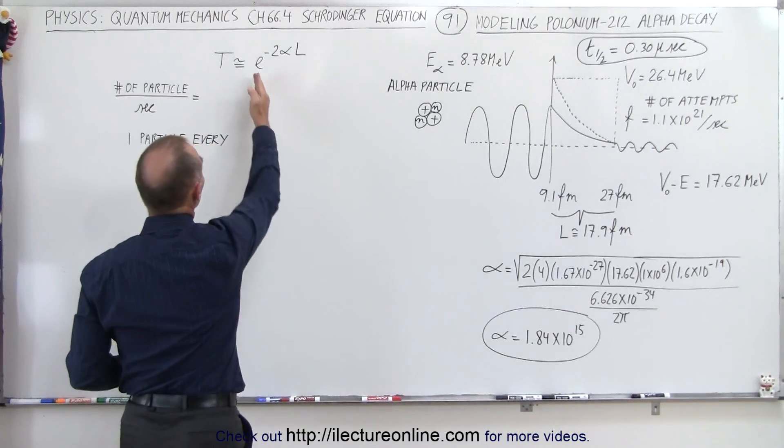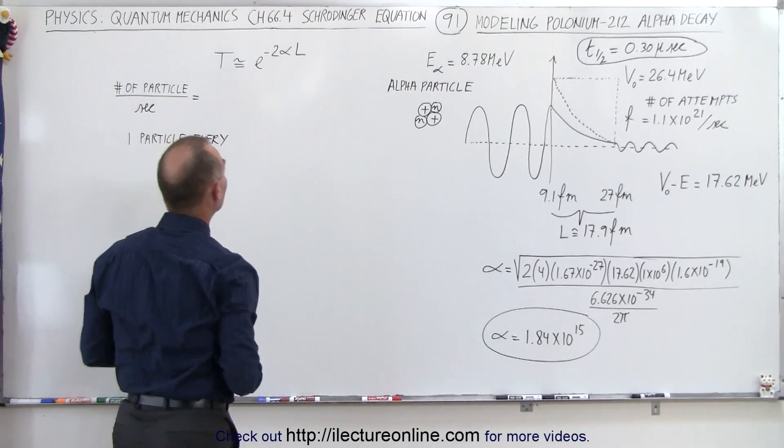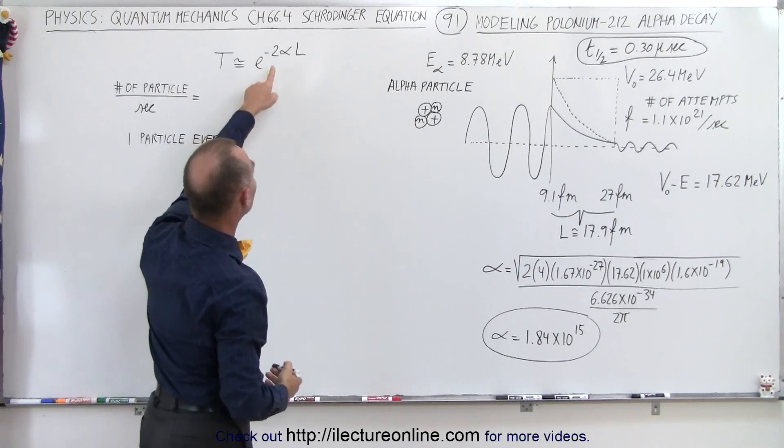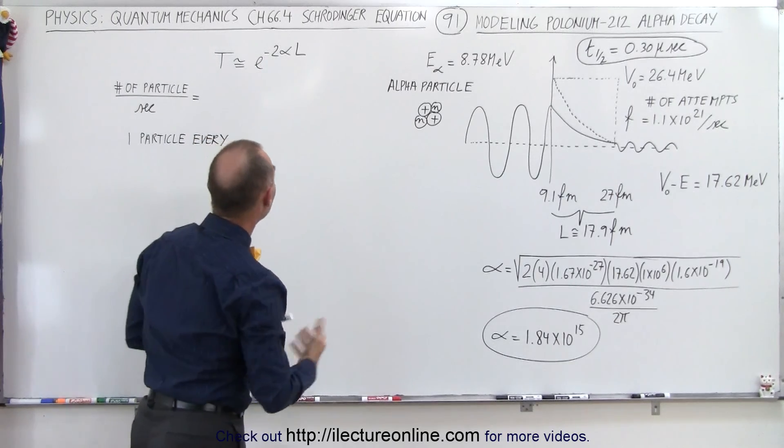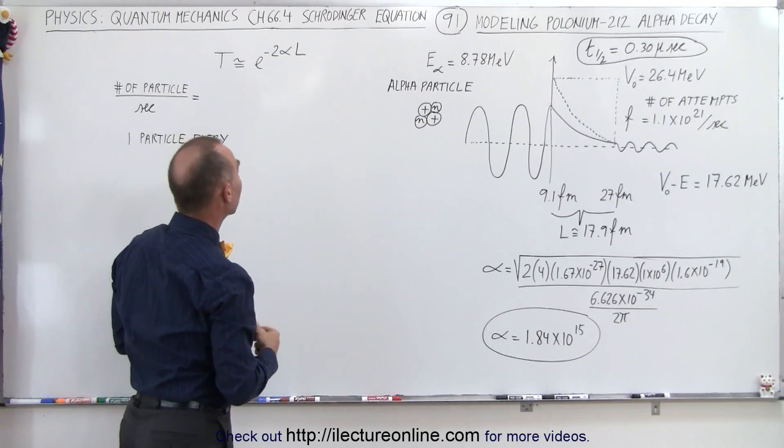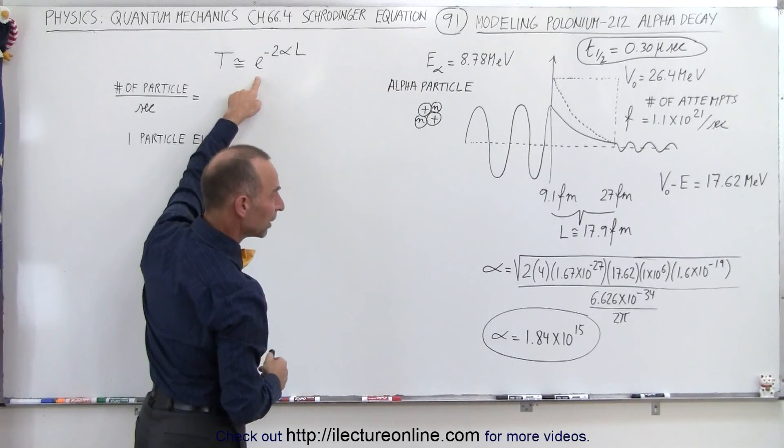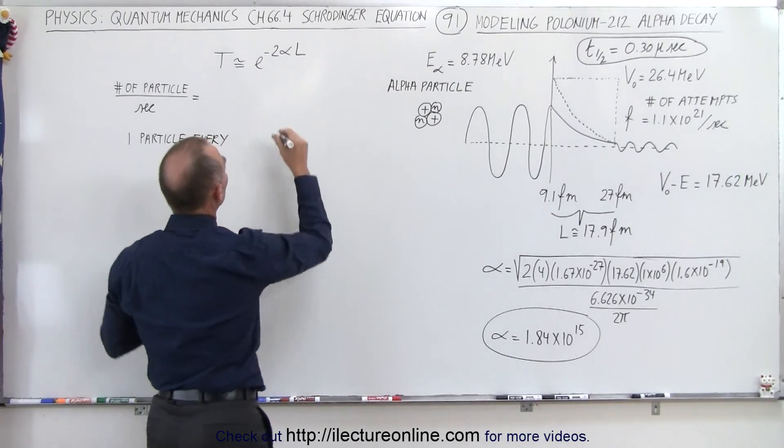To make this simple, we just got rid of the factor in front of it, so we just have to find the 2αL and then raise that to the negative exponent of e. So let's go ahead and do that—let's find the 2αL.